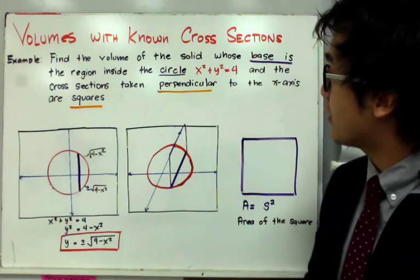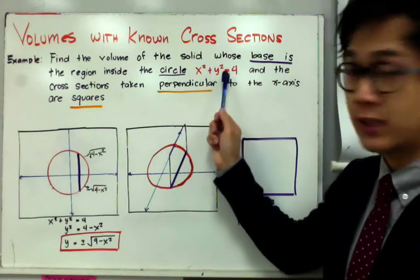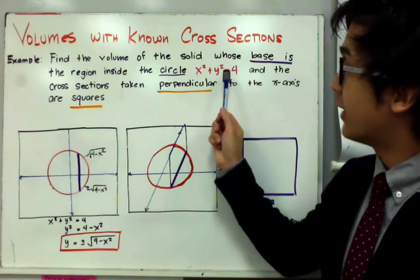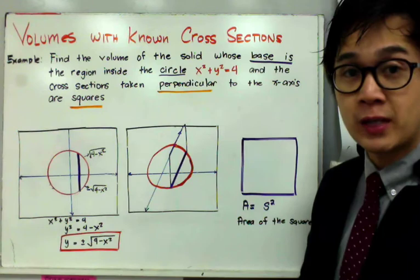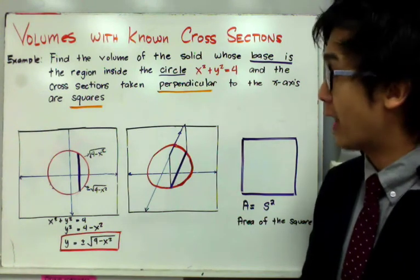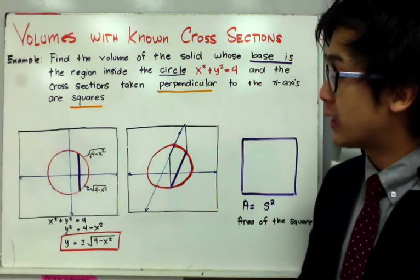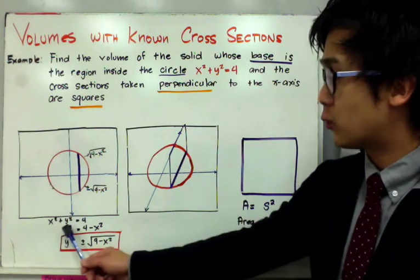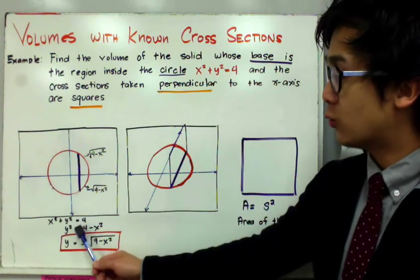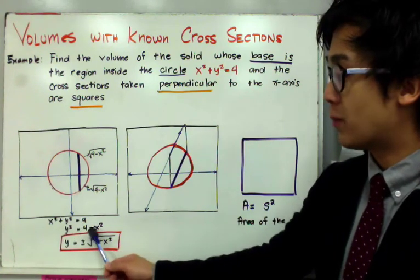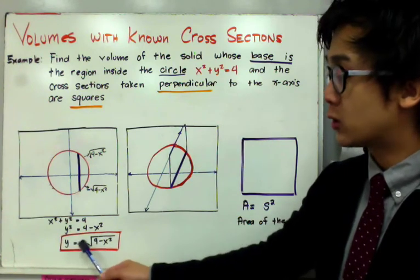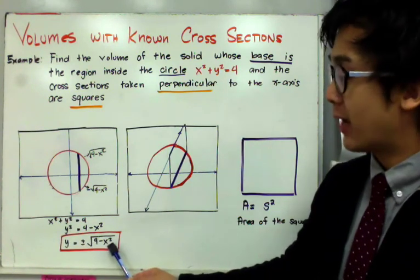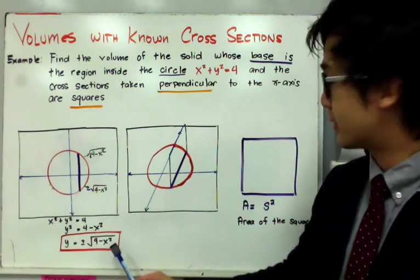Since the equation of the circle is x² + y² = 4, we need to convert the equation into a function with respect to x. Setting it equal to y, we get y² = 4 - x², which gives y = ±√(4 - x²). This is the equation of the circle with respect to x.